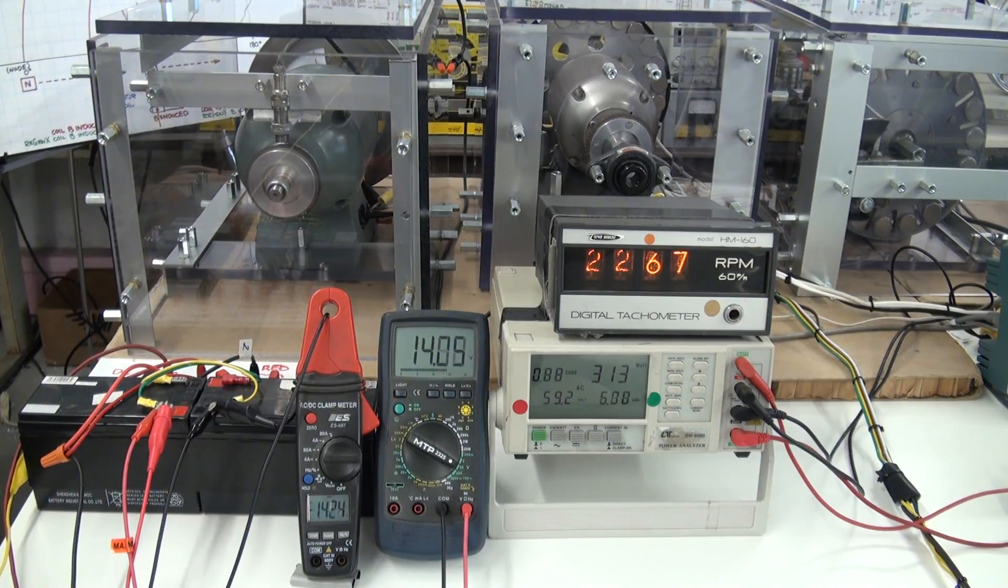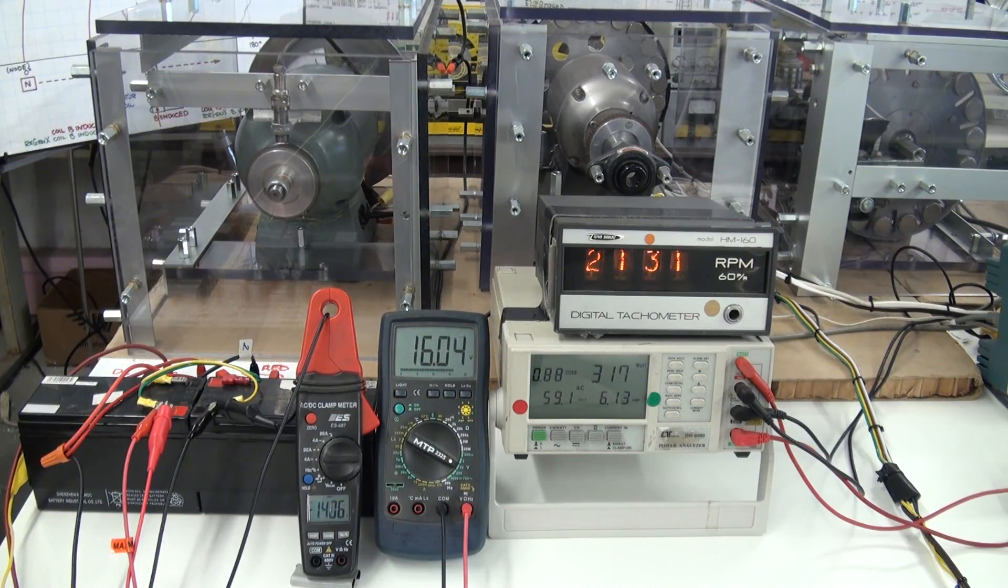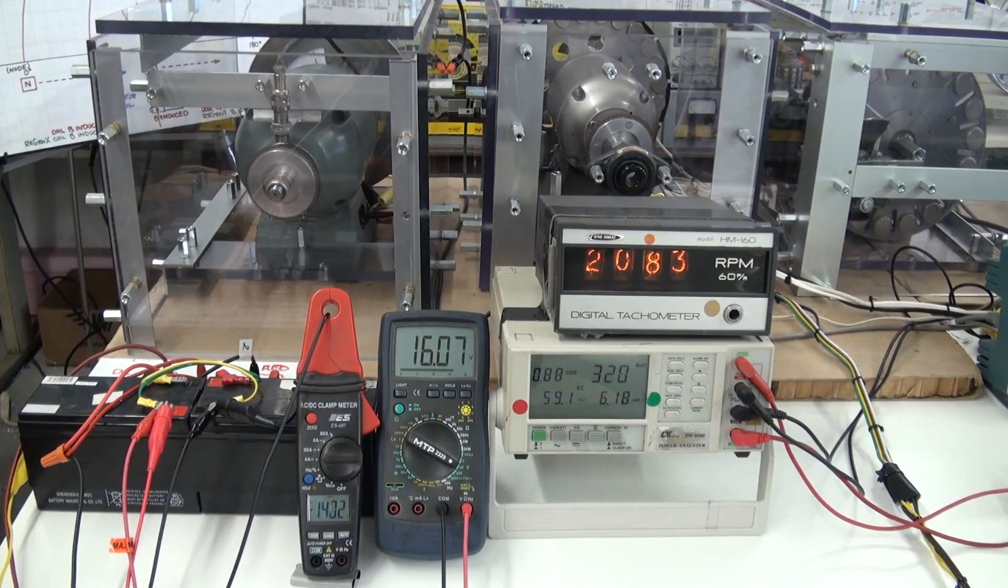So now we're in regenerative braking mode. The load current is 1.4 amps. Battery is charging. System is decelerating and we're in regenerative braking mode.